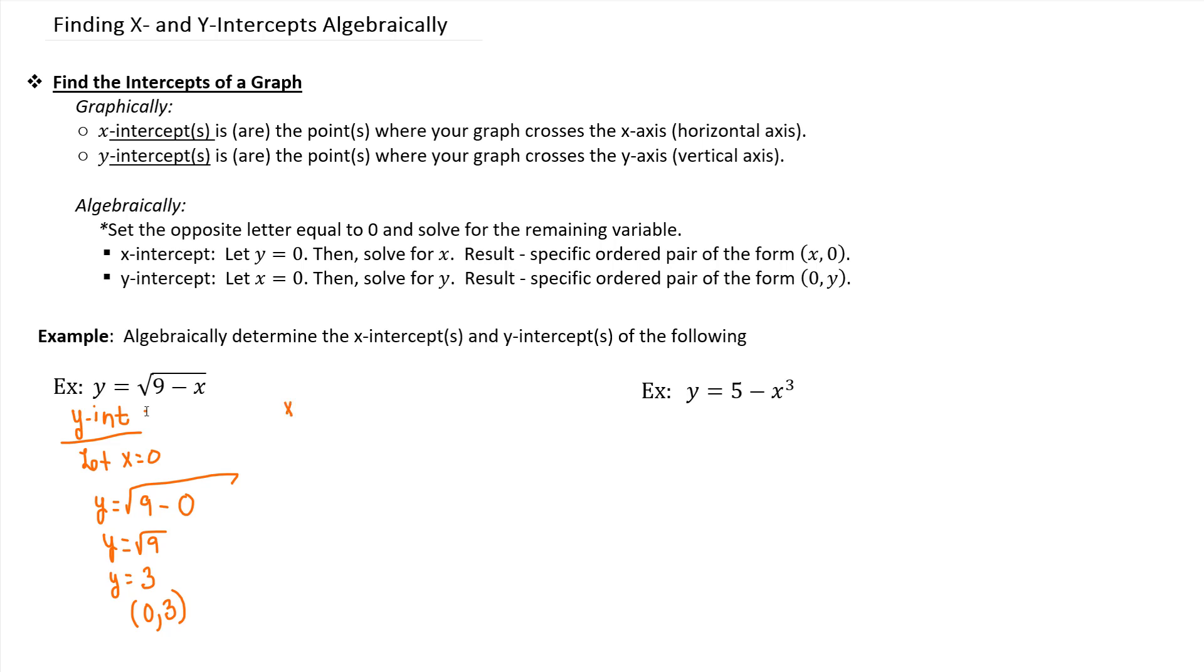So then you would do the same thing for x-intercept, but you would let, instead of letting x be 0, you'd let y be 0. Put 0 in for y, and then you have the square root of 9 minus x. Now this intercept isn't as straightforward. You have to do a little bit more algebra and work. But keep in mind that now after you let y be 0, your goal is to solve for x.